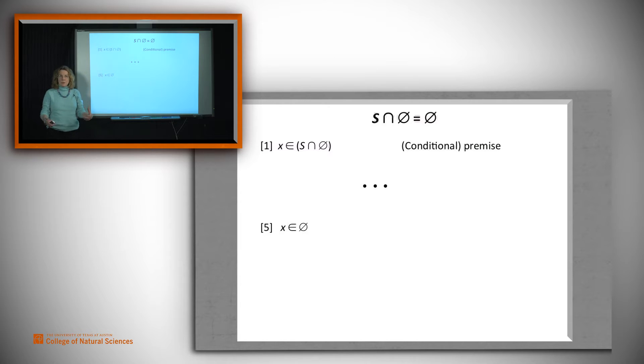Now let's look at how we do this proof where we write out all the steps. What we want to do is we'll take, we'll do the first piece first. So let's take as a conditional premise that x, some arbitrary x, is an element of S intersect the empty set.